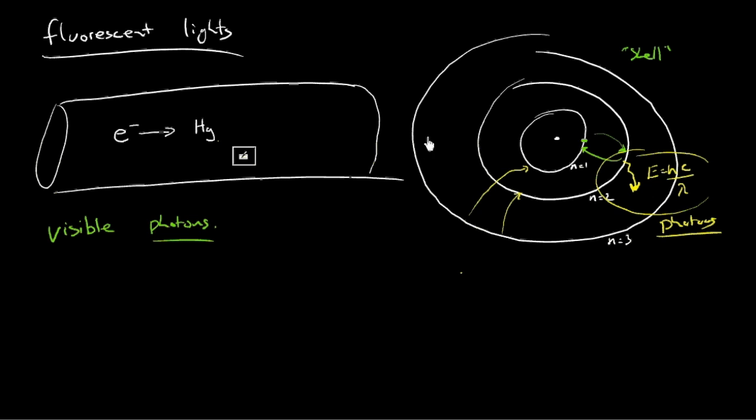And it turns out that the transitions that are caused to occur in mercury are actually in the ultraviolet. So let me pick a color close to that that we'll still be able to see. So let me make it blue just for kicks. So there's a photon in the ultraviolet range of the spectrum. Now that's not really any good to us, because it'll give us a sunburn, and we won't be able to see what we're trying to read.